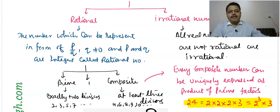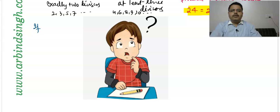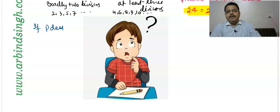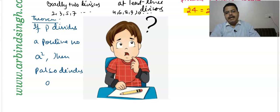Now let us see what the theorem is. The statement of the theorem is: if p is any prime number and p divides a², then p also divides a.